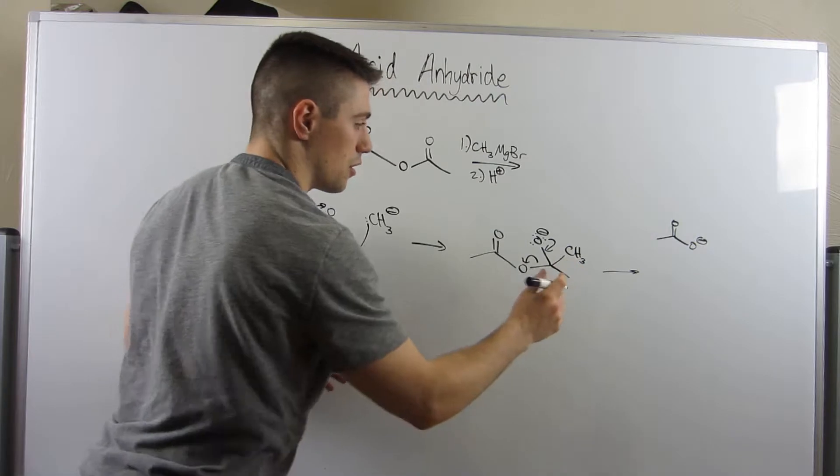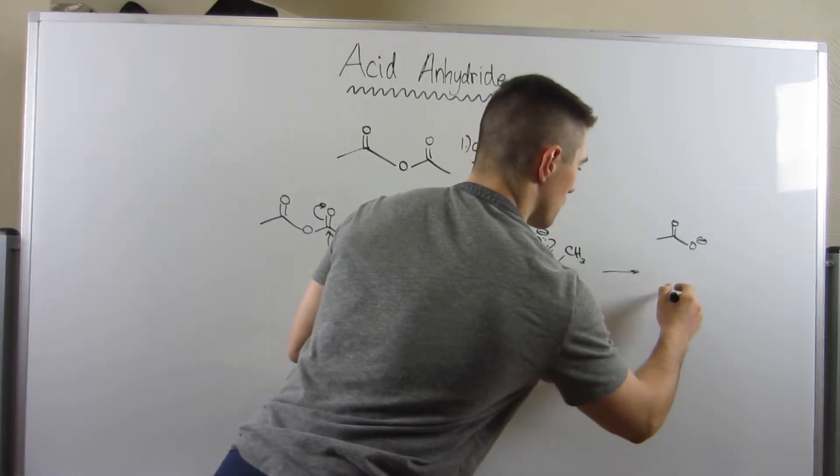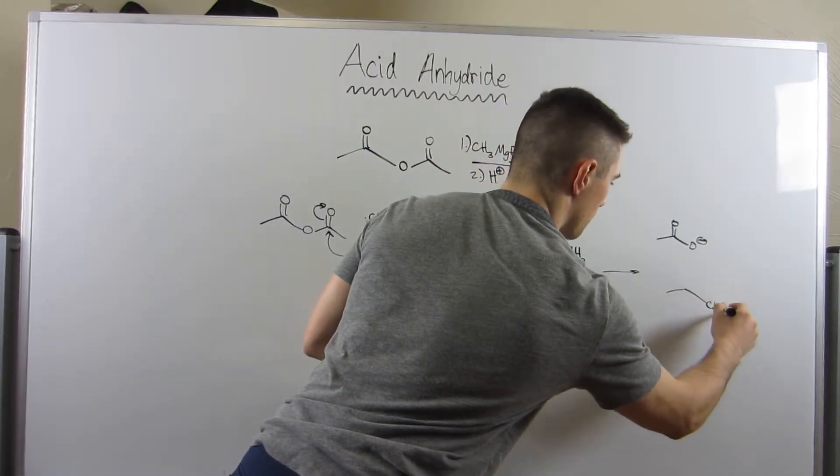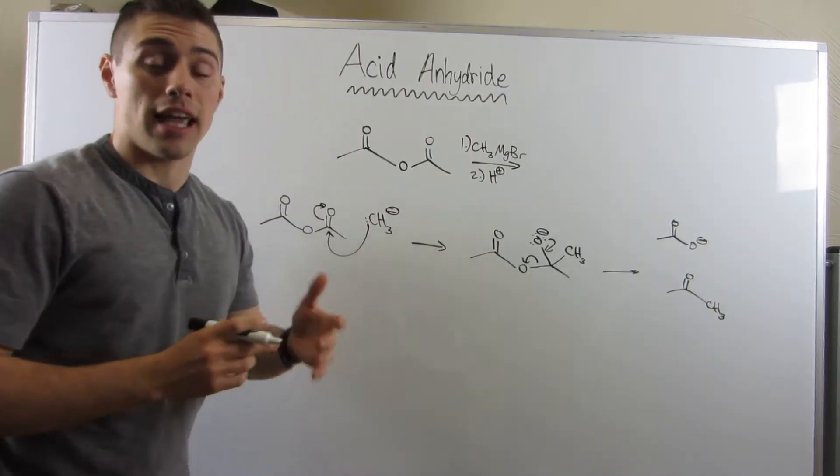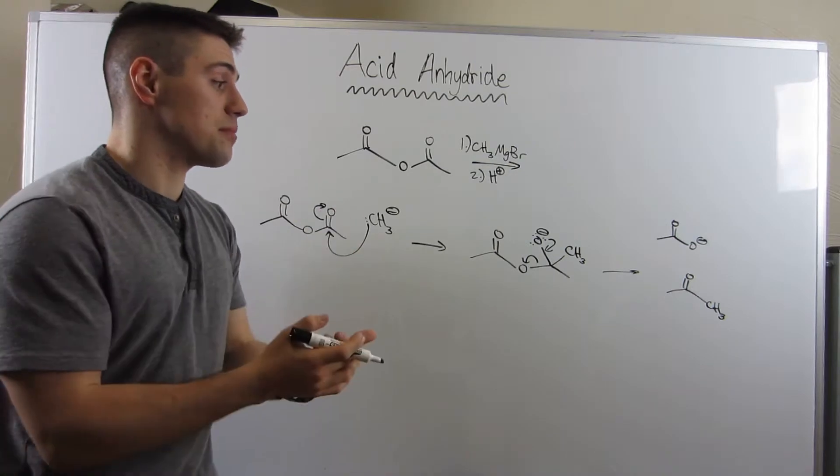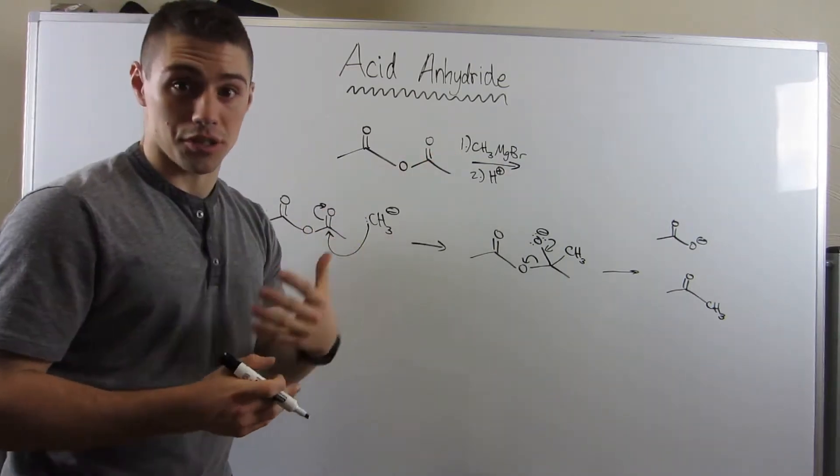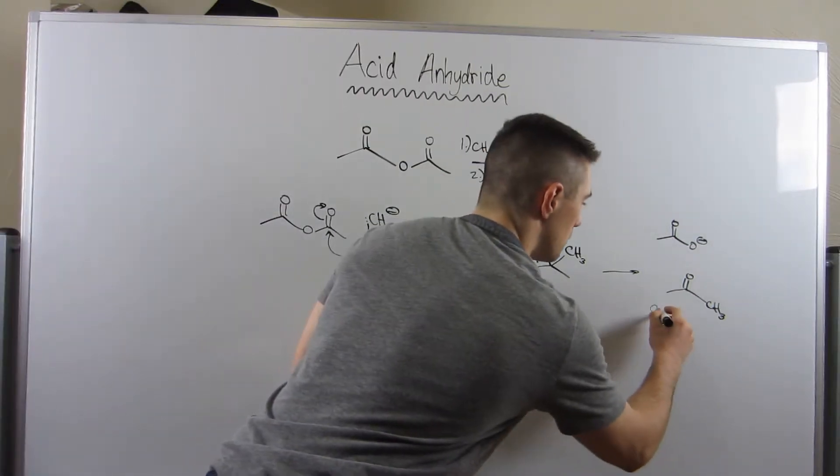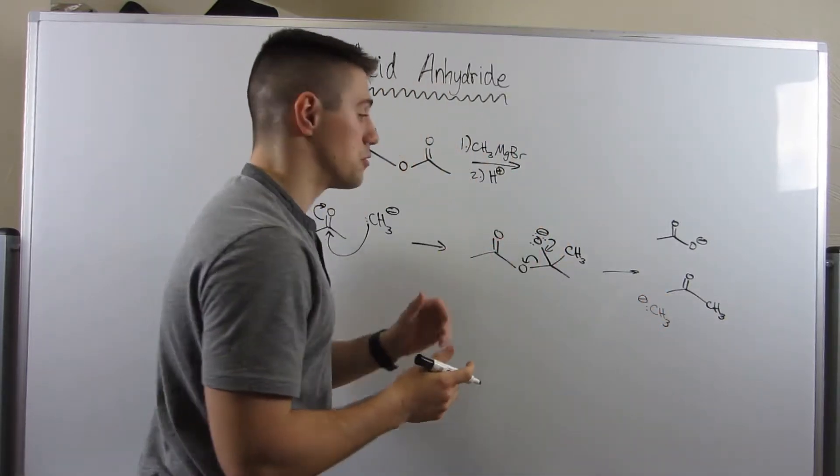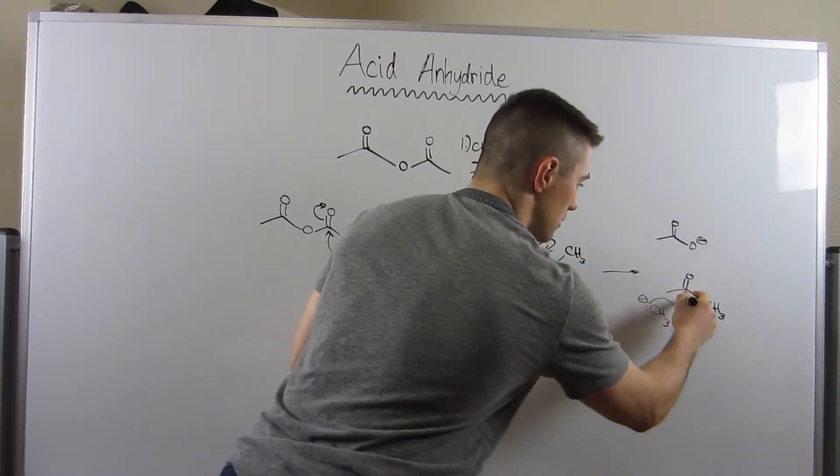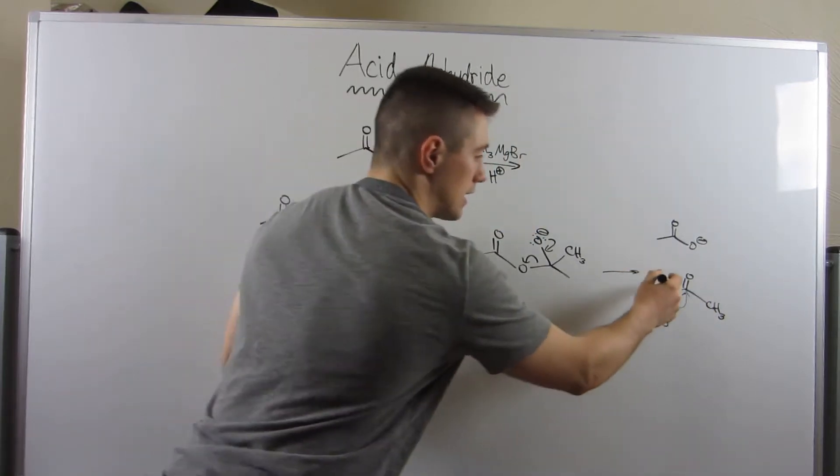And the result of what I had. Just like in the last video, it's a ketone, right? Again, a functional group susceptible to another grignard attack. So that's what I'm going to do. Introduce another grignard, have him attack the carbonyl carbon, kick electrons up.